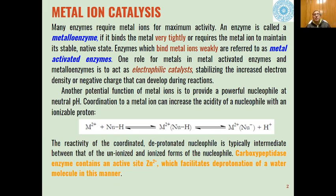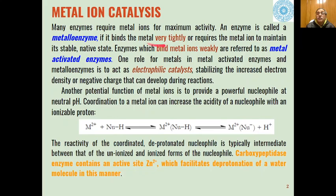First is metal ion catalysis. Many enzymes require additional metal ions for their activity. An enzyme is called a metalloenzyme if it binds the metal very tightly, and if it binds a metal ion weakly then it is referred to as a metal-activated enzyme. This is how we differentiate between metalloenzymes and metal-activated enzymes.